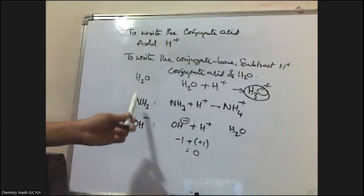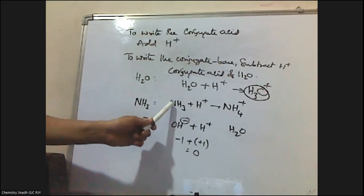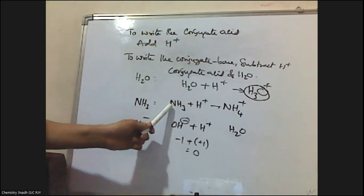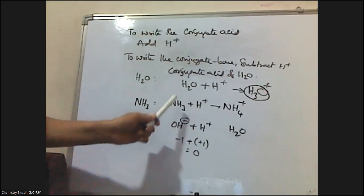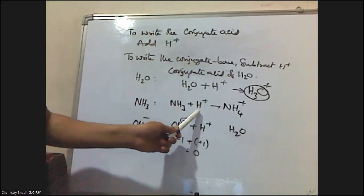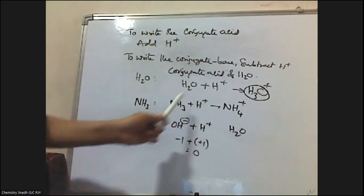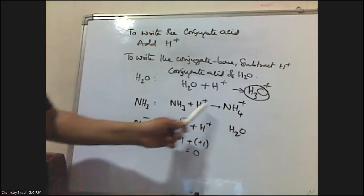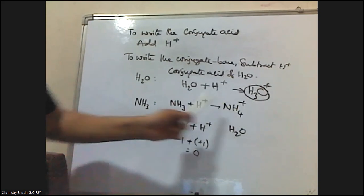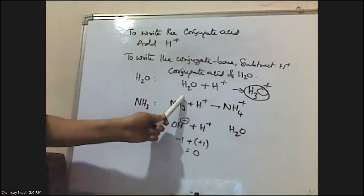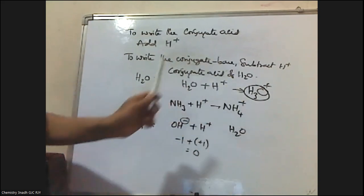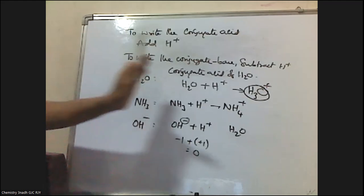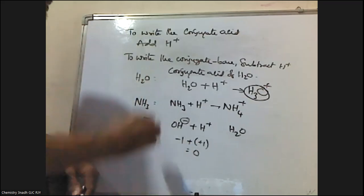Just to recap: the Conjugate Acid of NH3. We add H⁺ — NH3 has three hydrogens, plus one more gives four. The charge is zero plus one, which becomes plus one. So NH4⁺ is the conjugate acid. This is the way to write the conjugate acid for a given species.